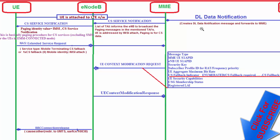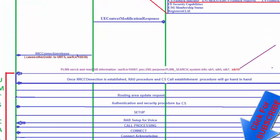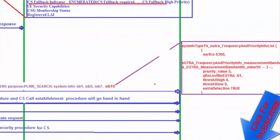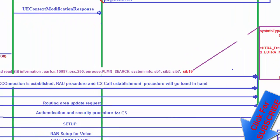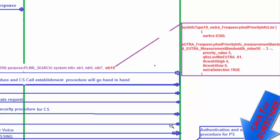After reading the UE Context Modification Request, the eNodeB sends a response and then sends an RRC Connection Release to the UE with a redirect to the UMTS network. Now the UE moves to the UMTS network through a PLMN search and reads the SIB information — specifically SIB 157 and SIB 19. SIB 19 is a very important message as it contains the EUTRA information, which the UE uses to reselect back to the LTE network after the call completes.